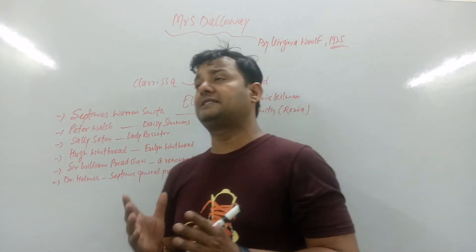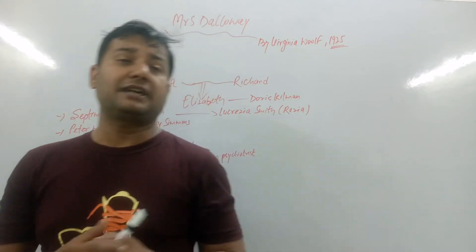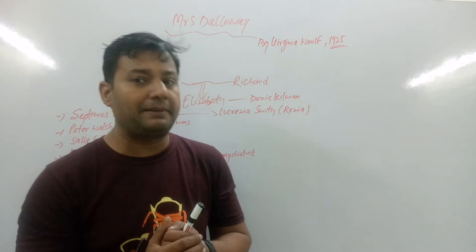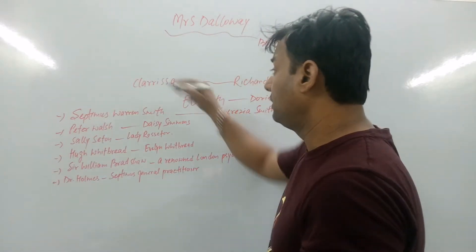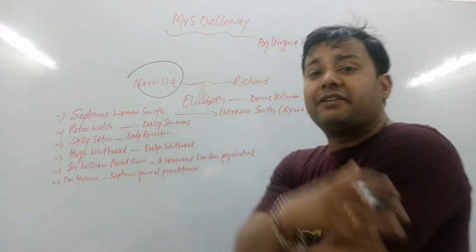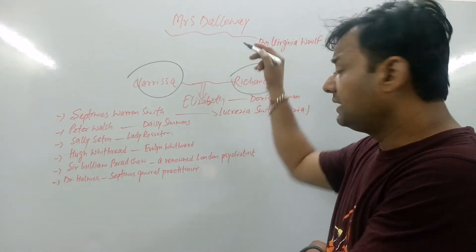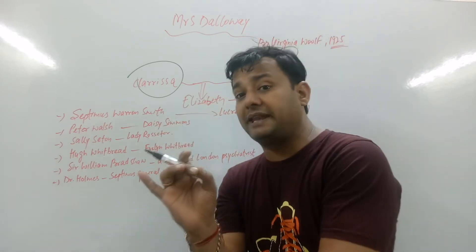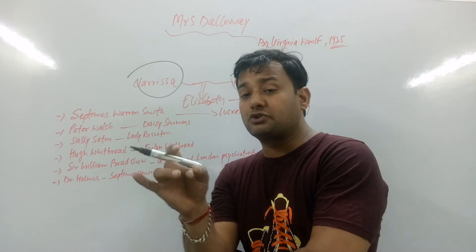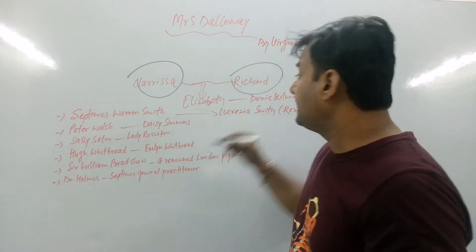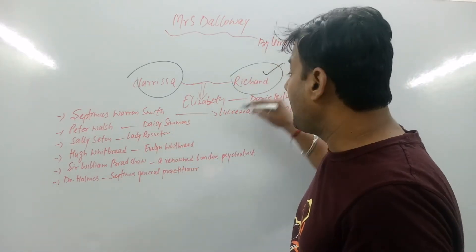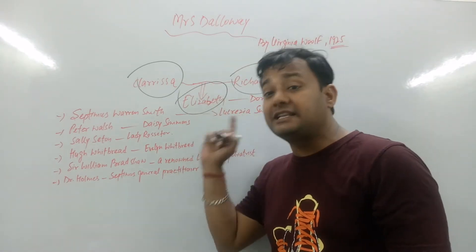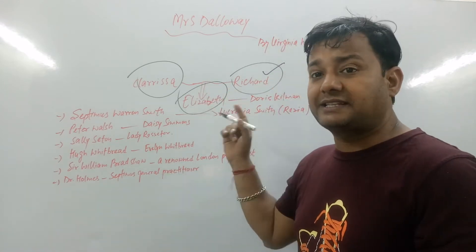Today is the story of a lady who was 53. It was her anniversary day and she was going out. She has a loving husband, Richard. He loves her very much. It was not a love marriage — it was their own choice to marry Richard. And Richard is a very loving husband and father of Elizabeth. Elizabeth was the only daughter of Clarissa and Richard.